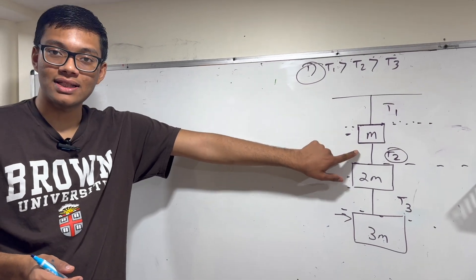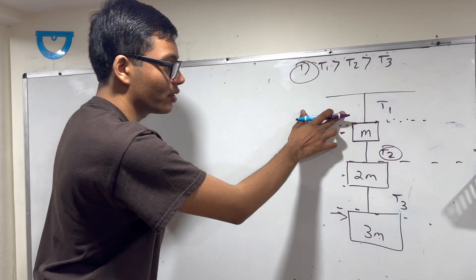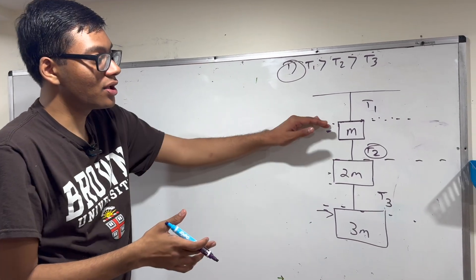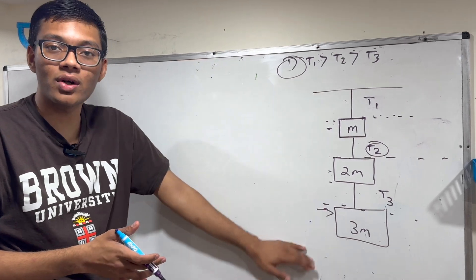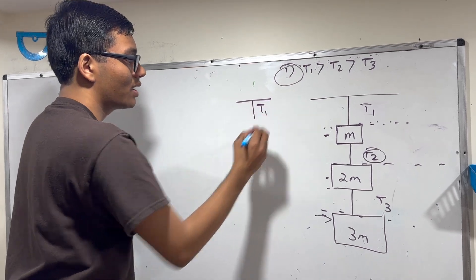To show that the tension in the first rope is greater than the tension in the second rope is greater than the tension in the third rope, how do we do that? Well, ropes can only pull, they can't push, so a rope doesn't know anything that's above it. It only knows what it has to pull that's below it.